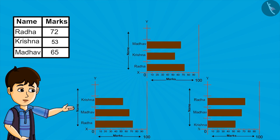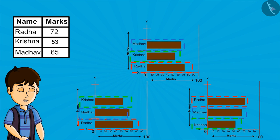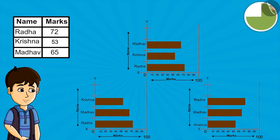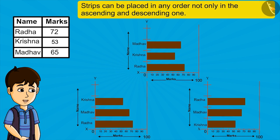Look at these three charts carefully. You can pause the video and closely look at the charts. You can rightly interpret data from all three charts. So we can say, strips can be placed in any order, not only in the ascending and descending one.